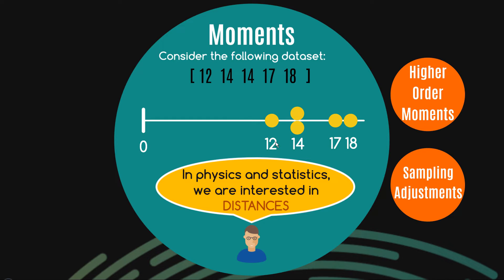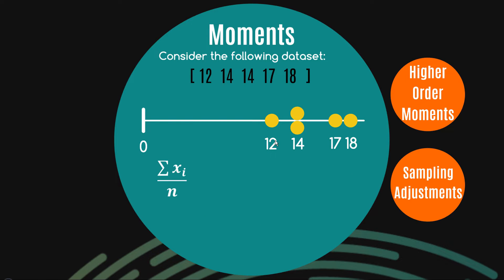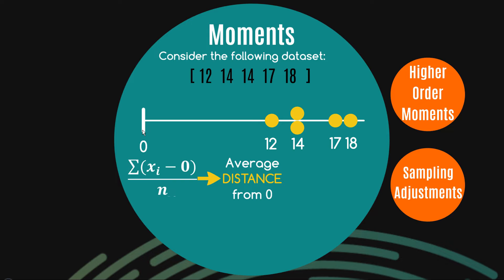What do these numbers actually mean? Well, 12 is 12 units away from zero. In physics you can appreciate that distances matter — when dealing with things like force and levers, distances are really important. So how about we try to find the average distance to zero? That's what the sum of x divided by n represents — you know that's the mean — but essentially you're calculating the average distance from zero. Another way of writing this might be the sum of (x minus 0) divided by n.